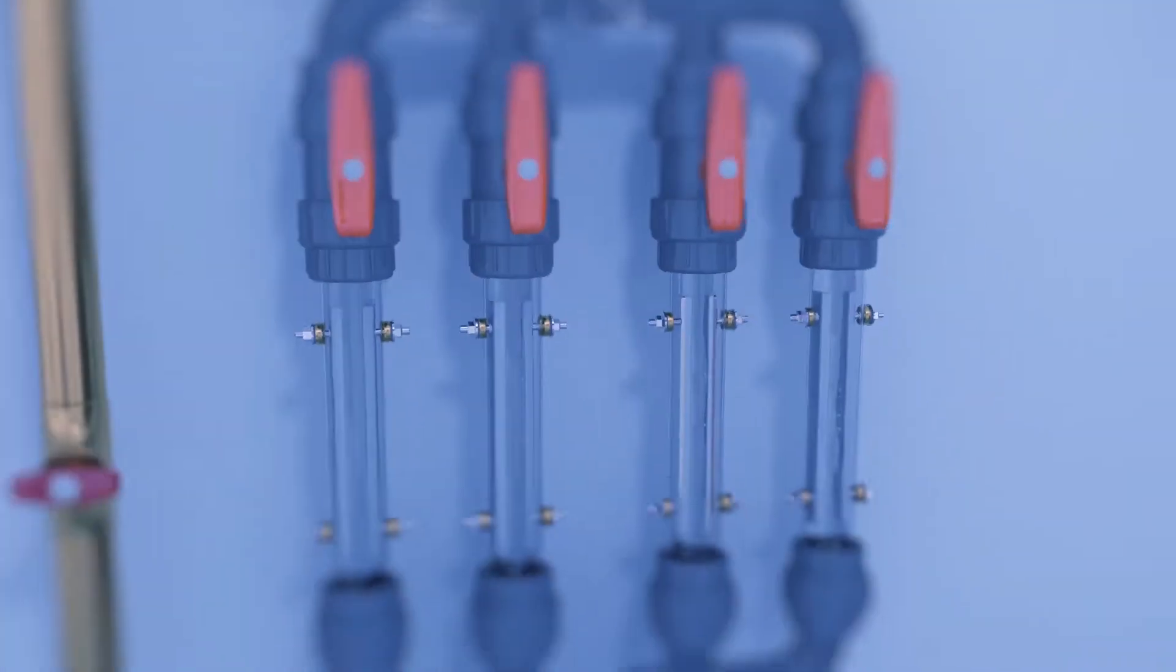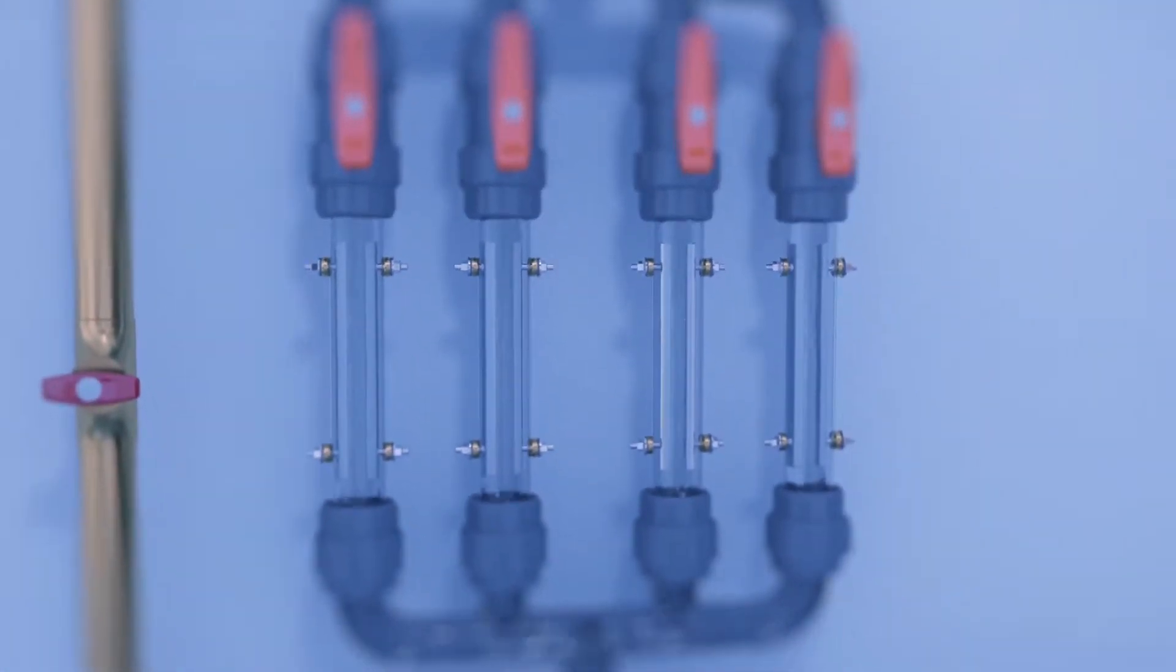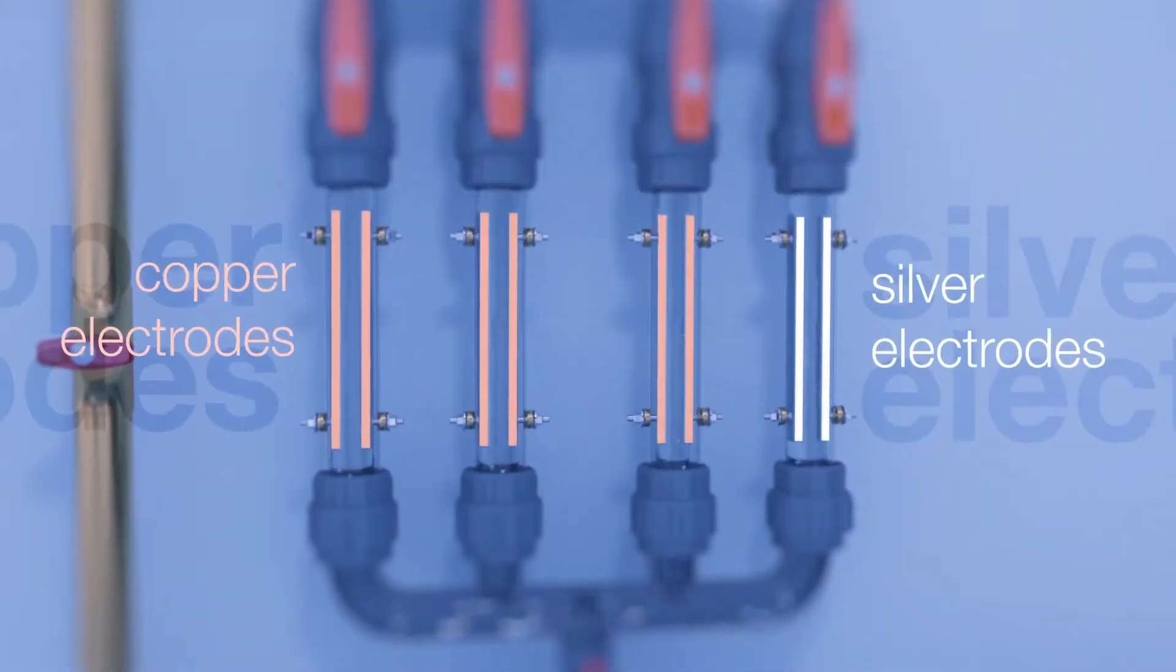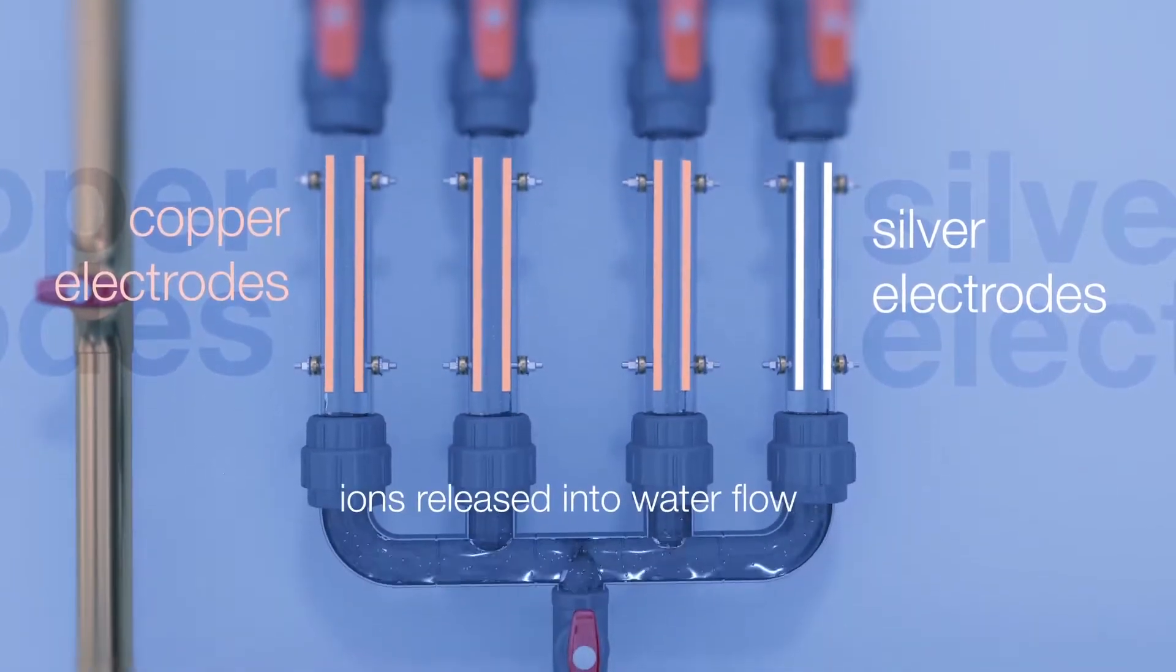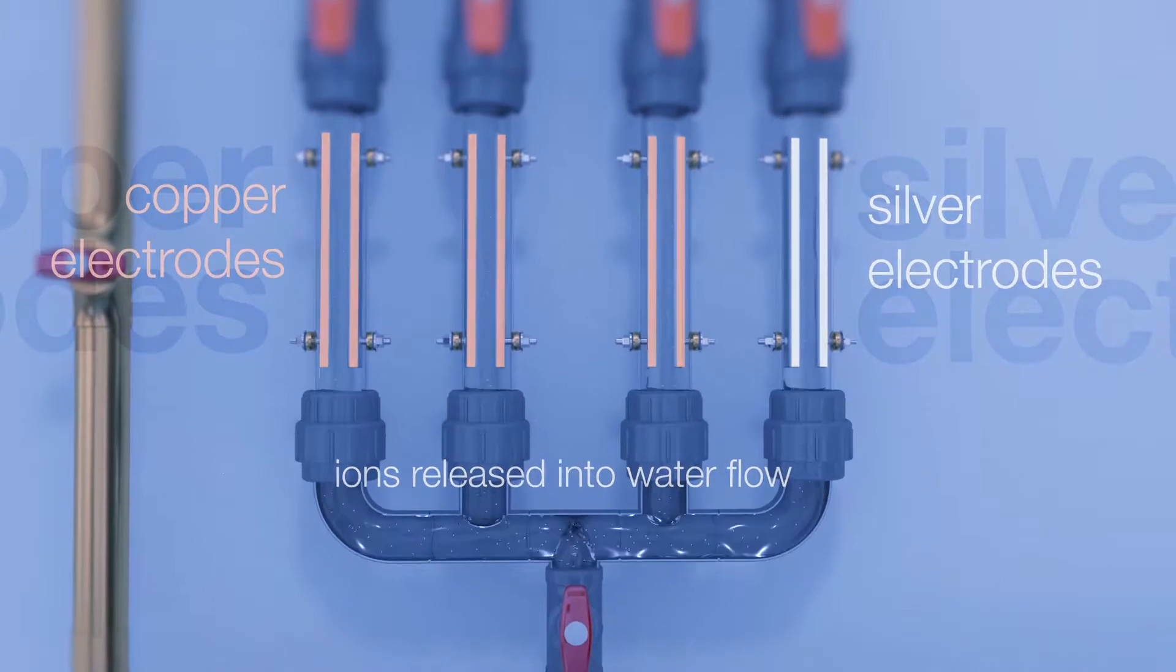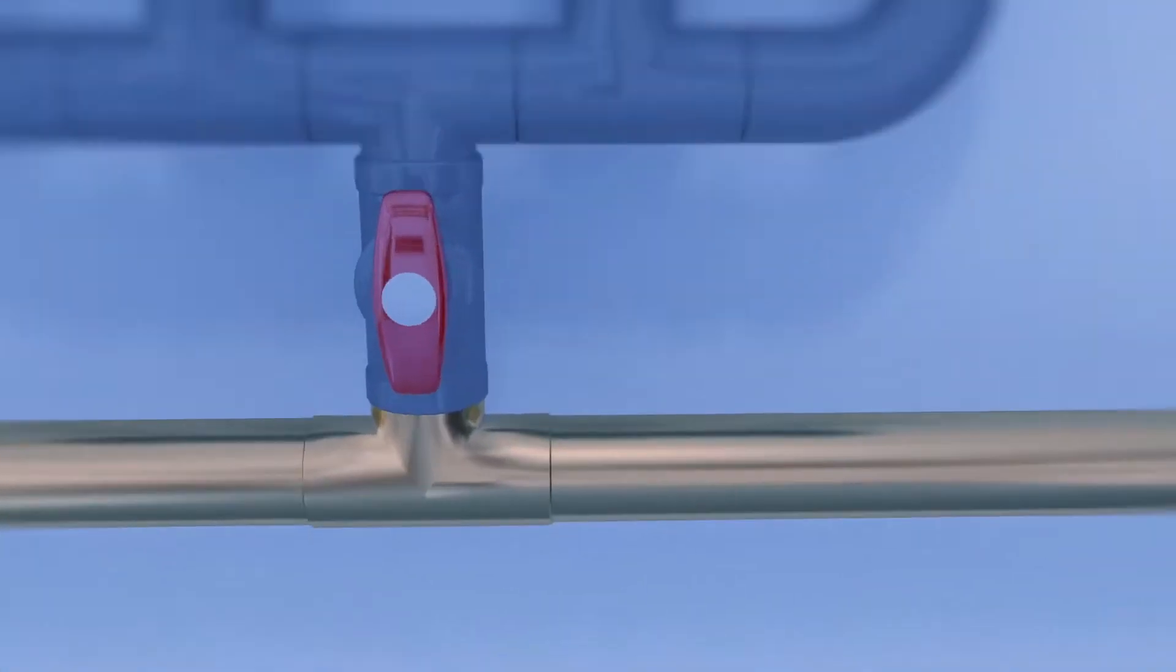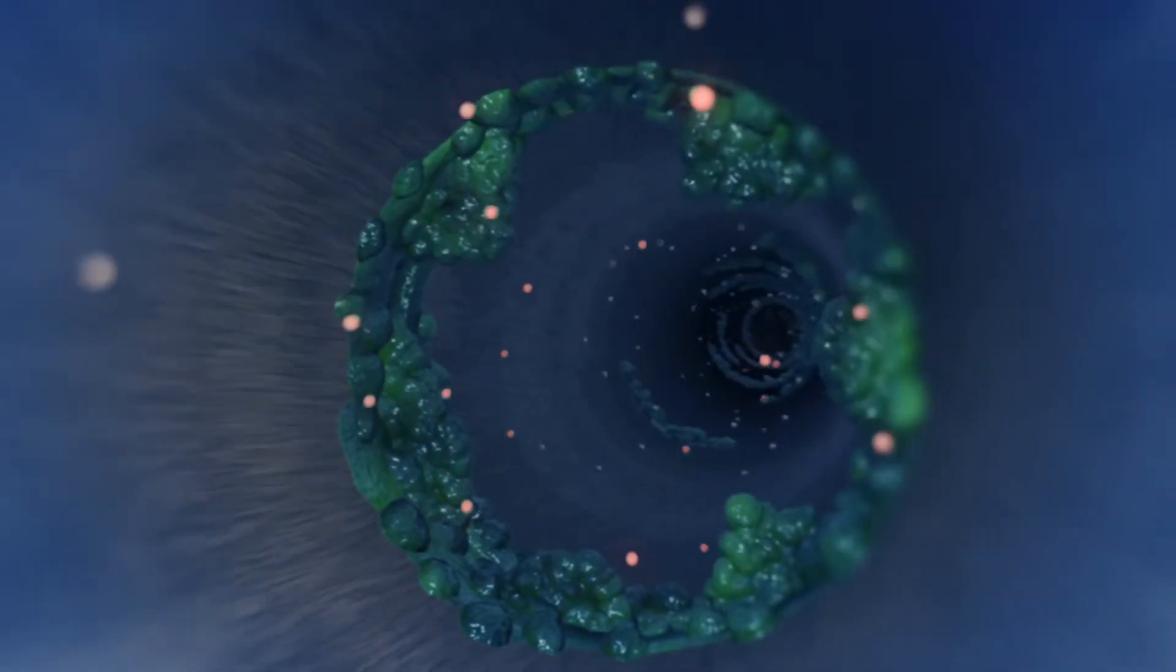The orca control unit then passes a low DC current between pairs of pure copper and pure silver electrodes. The current causes the release of electrically charged copper and silver ions, which are released proportionally depending upon differing flow rates.